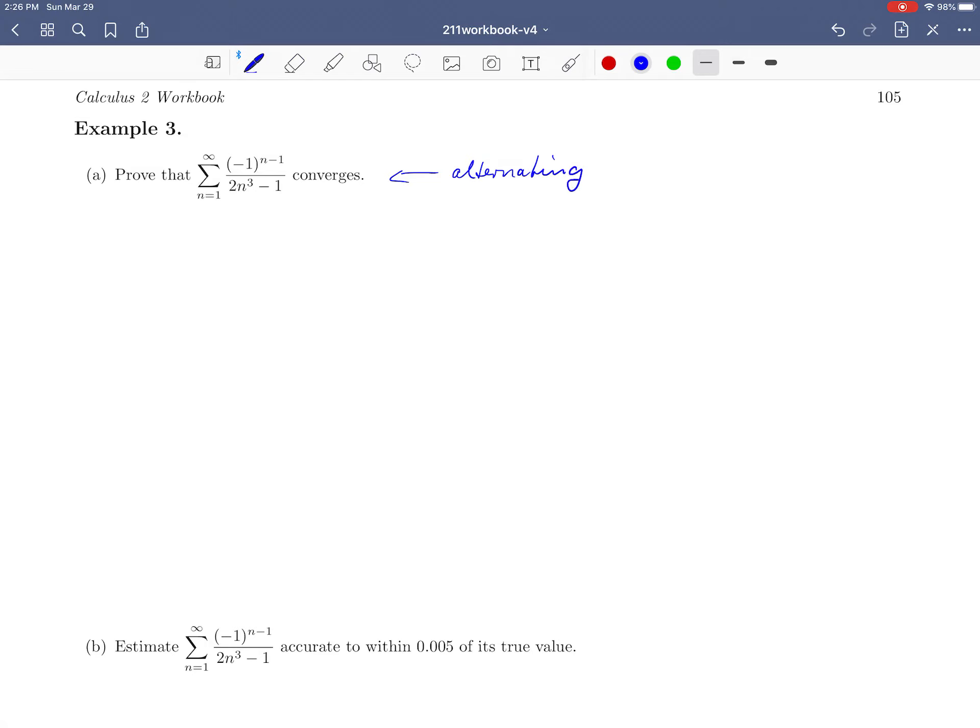I already said it's alternating, but let's rewrite it and let's write down what bn is at first. So this is alternating. We have the minus 1 to the n minus 1 term that's going to cause the sign to switch back and forth to positive, negative, positive, negative. And bn is 1 over 2n cubed minus 1.